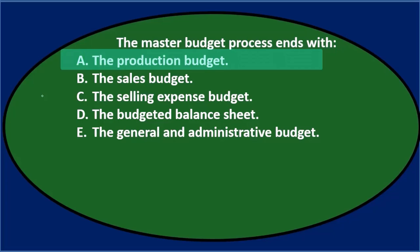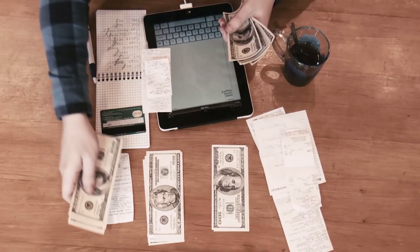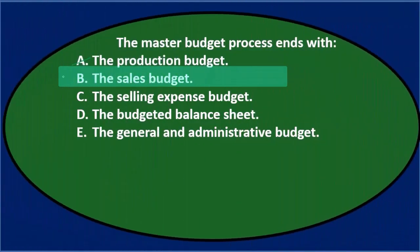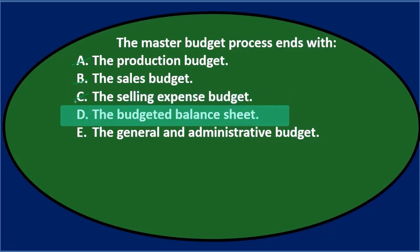The production budget would be somewhere near the top, since you need to know how much to produce — so that's not the ending point. The sales budget is one of the very first things we need, so that's where we begin, not end. The selling expense budget seems like it's somewhere in the middle — not really the finale. The budgeted balance sheet sounds fully completed — I'll keep that one.